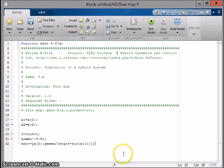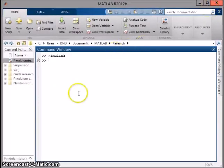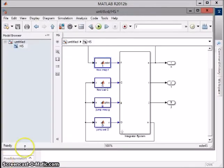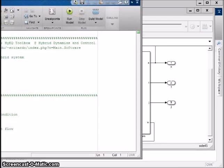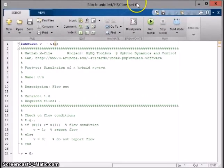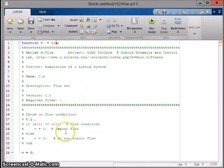Now we'll move on to the flow set. Exit out of the flow map and double-click the flow set C. Because this initial model never jumps, we simply type v equals 1.